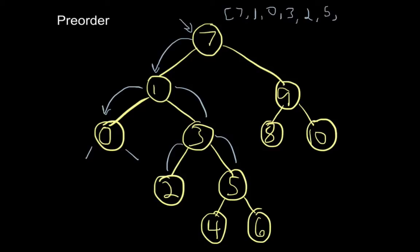From 5, go down to 4, then back up to 5, and then go to 6. We've completed the left side of the binary search tree.